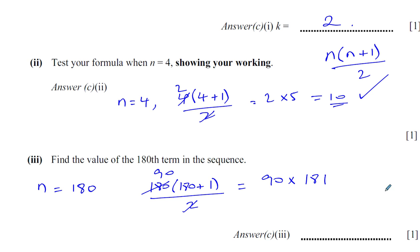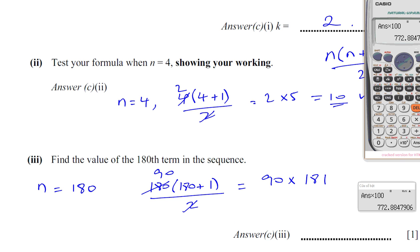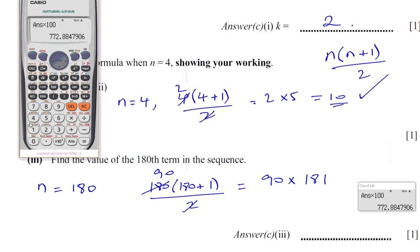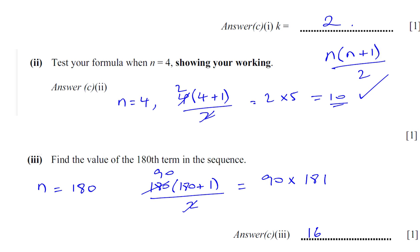So you're left with 90 multiplied by 181. When you do 90 multiplied by 181, you get 16,290. And there we have part c done.